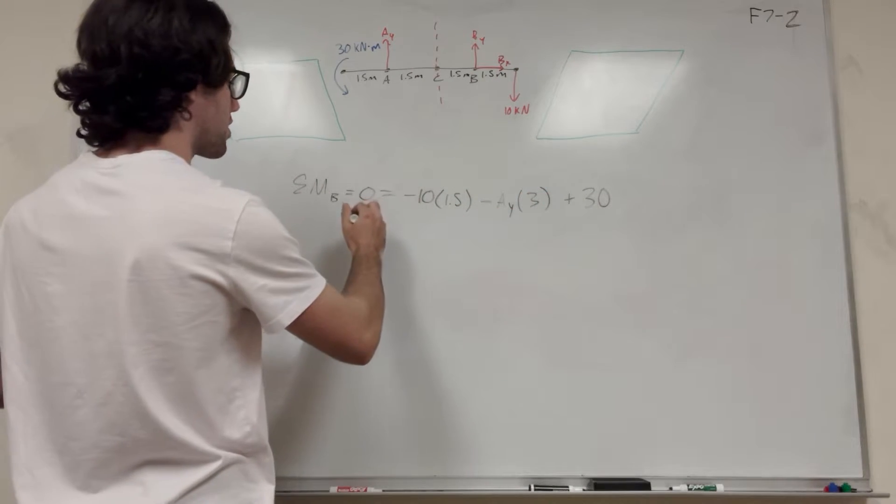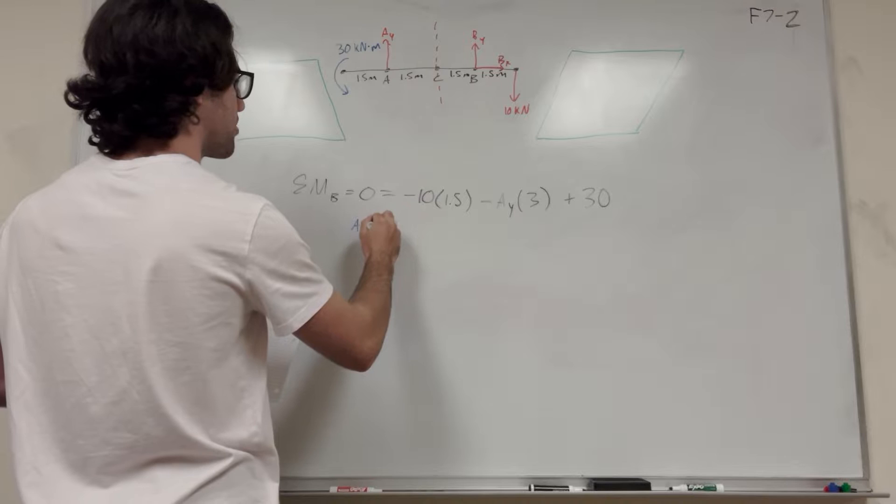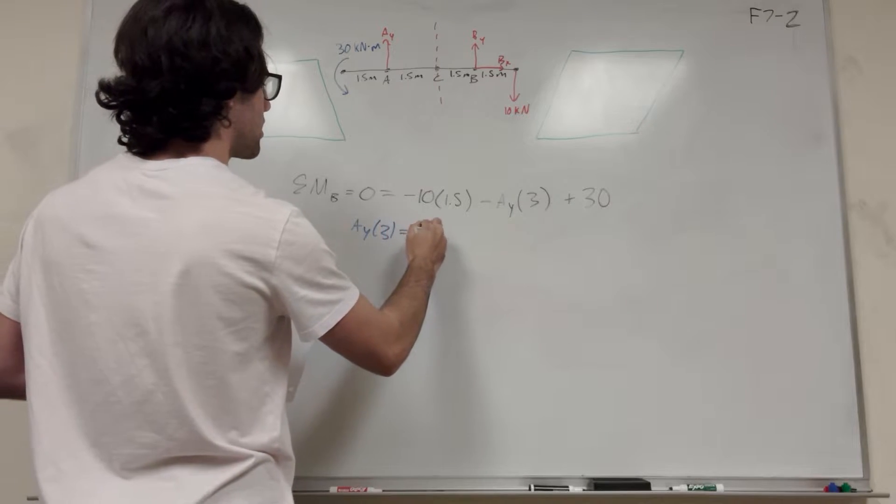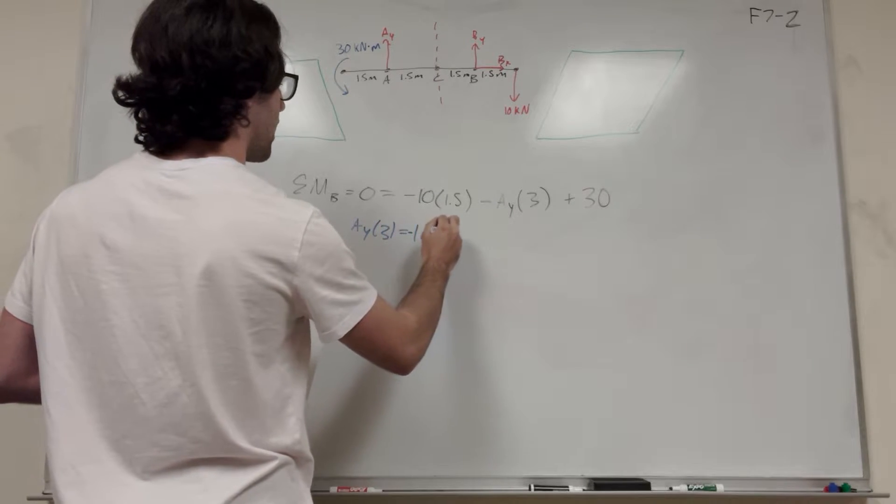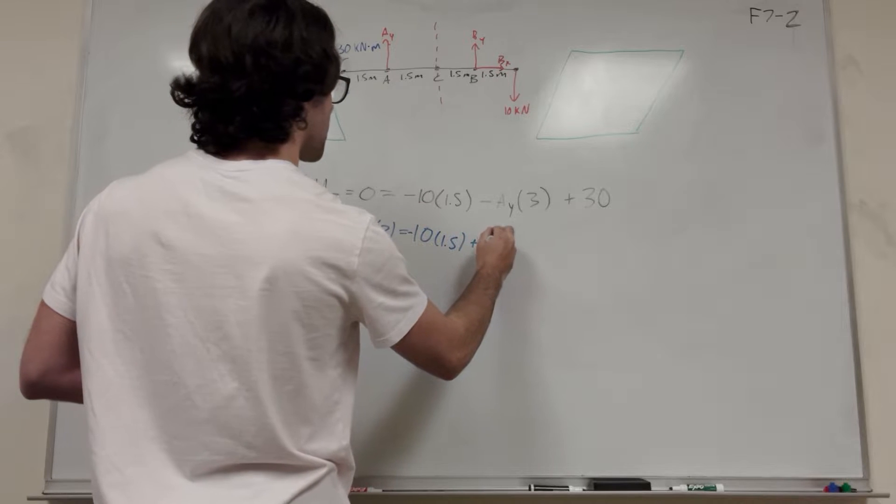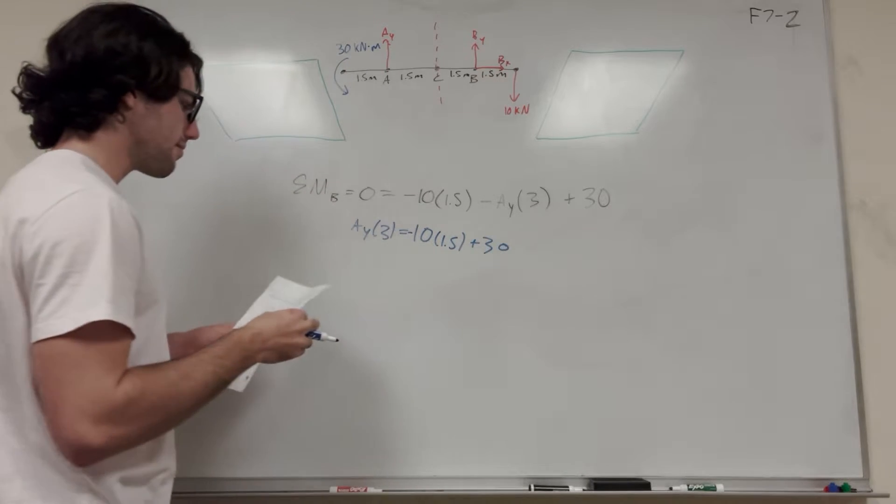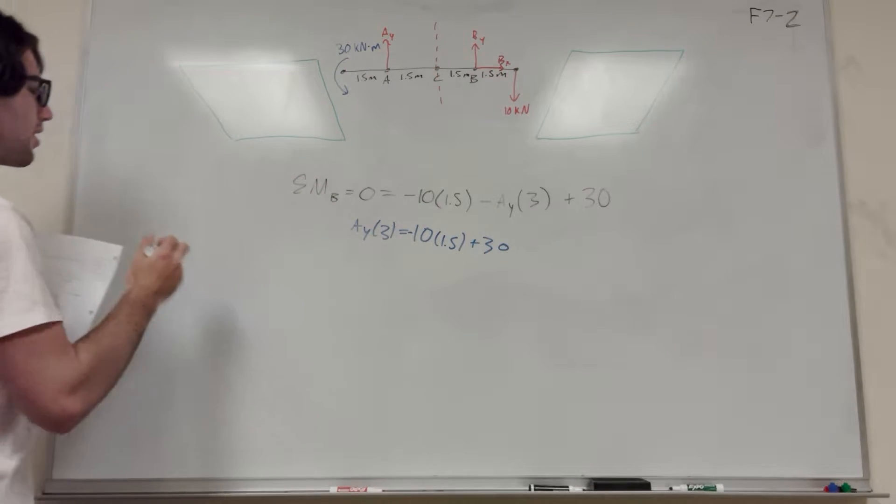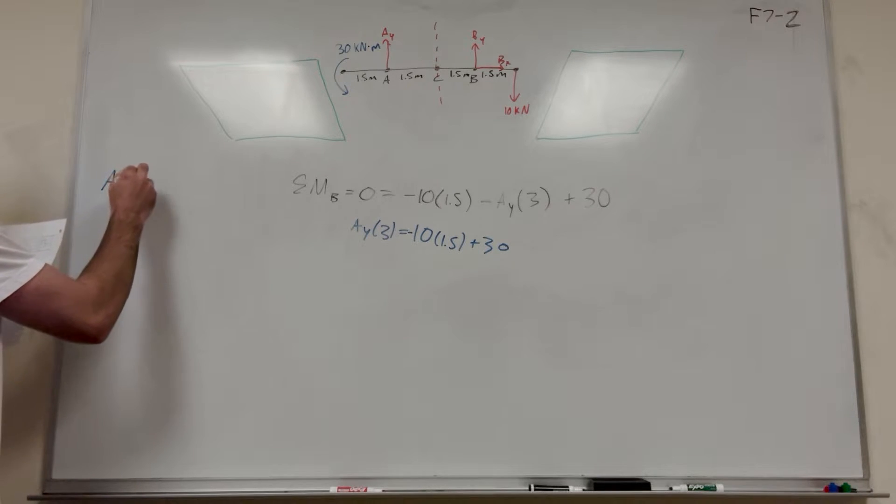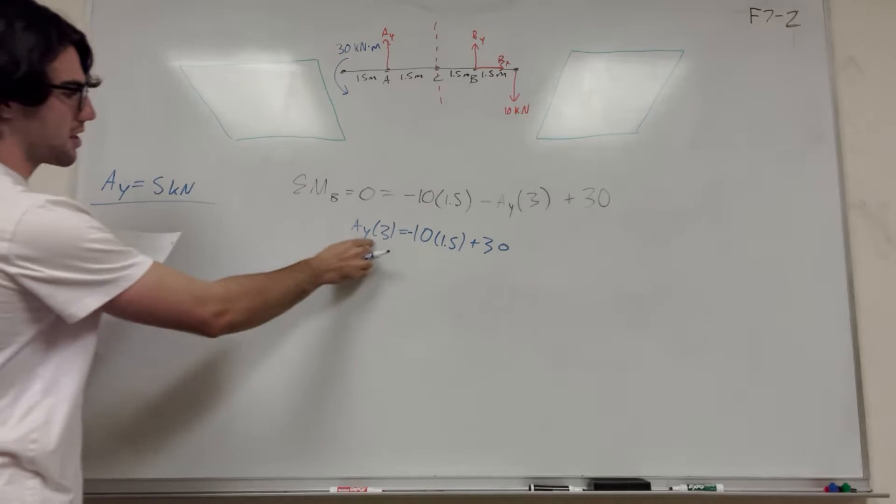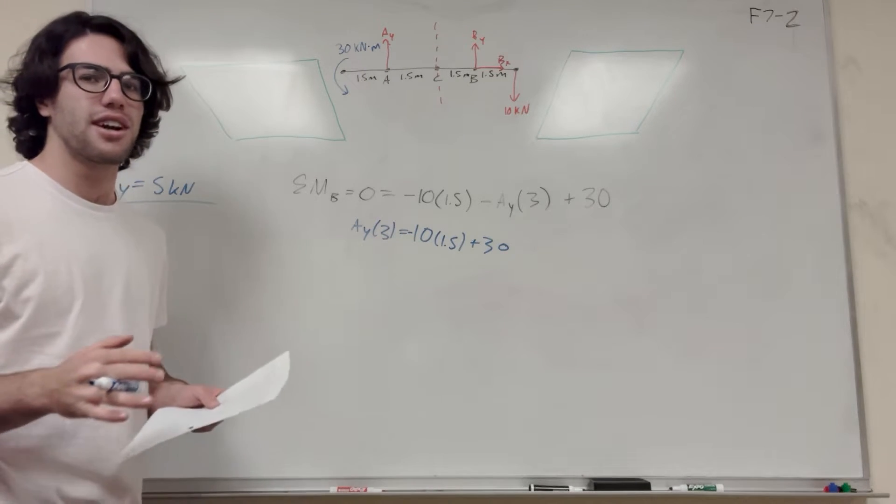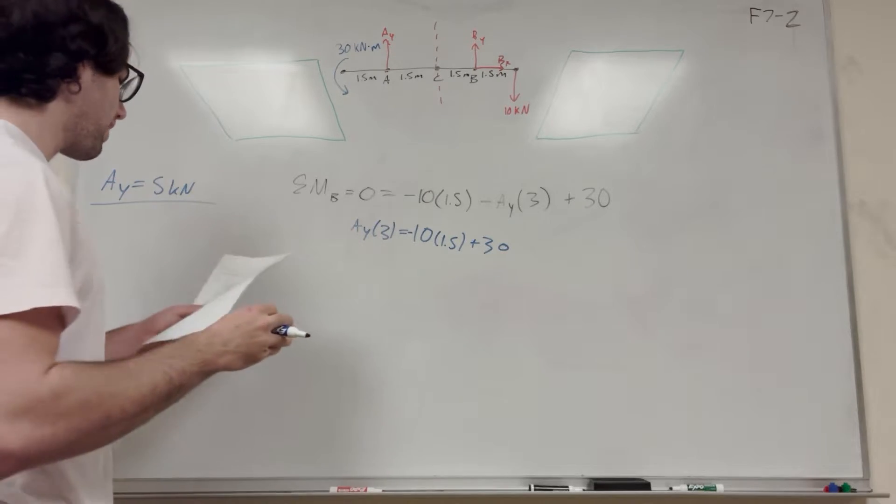So of course we're going to move A_Y over. So you'll get A_Y times 3 is equal to negative 10 times 1.5 plus 30. And you're going to get that A_Y is equal to 5 kilonewtons. So I'm going to trust that you guys know how to do this math. Okay, so now we have A_Y.